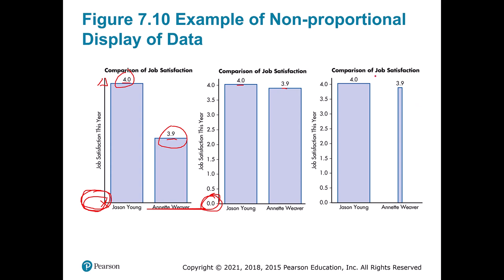There's also a problem on the right-hand chart: it has the correct height for each value, but on one side bars are made very wide and on the other very skinny. Our eyes respond to area as well as height, so you don't want to encode information twice.